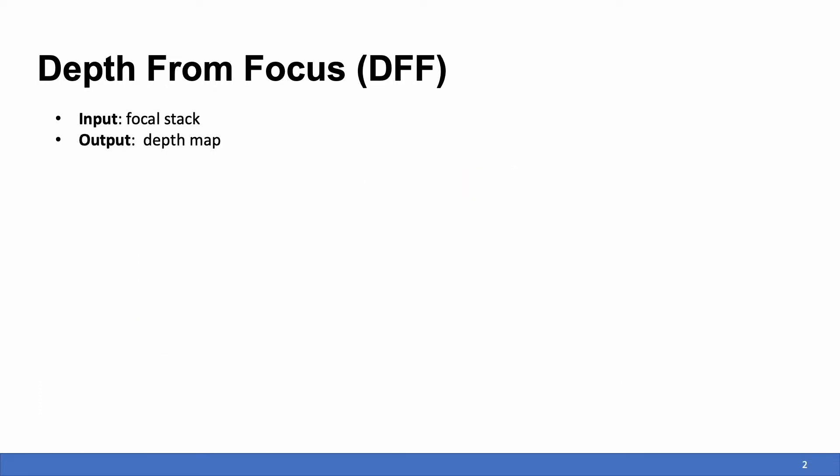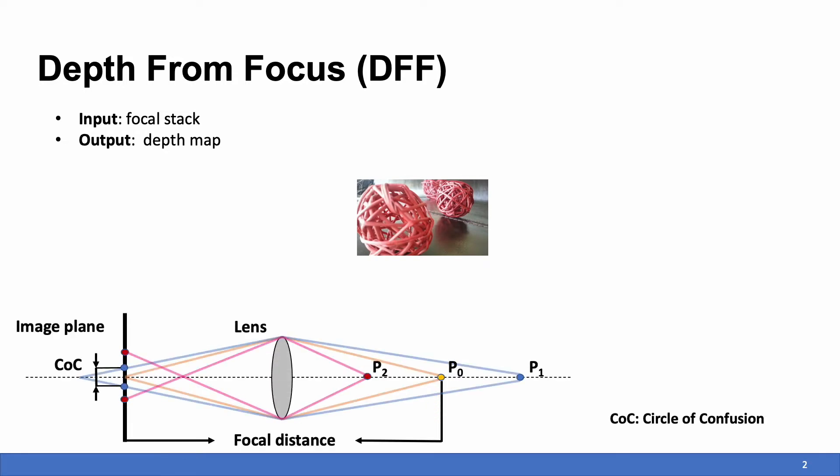The input is called focal stack and the output is a depth map. Due to the physical constraints, many cameras can only obtain a clear image of the object around the focal distance, like the second ball shown in the picture and point zero shown in the bottom diagram.